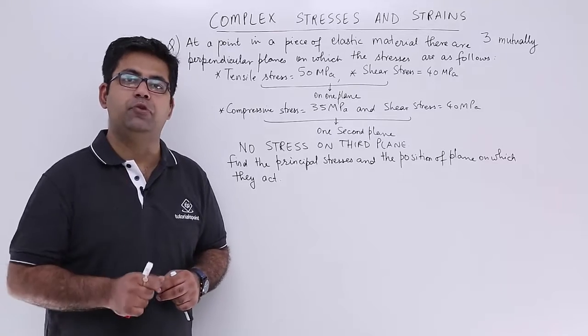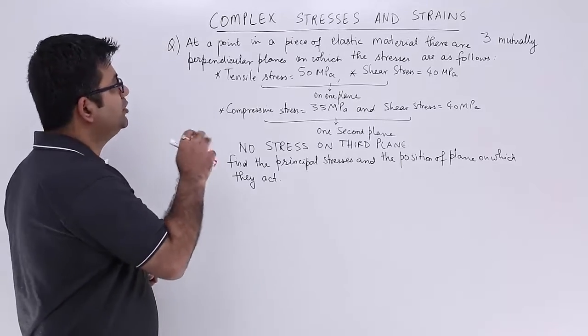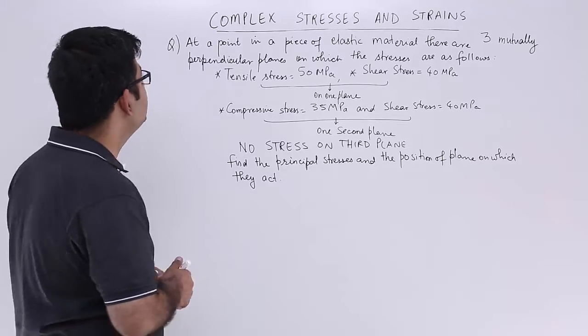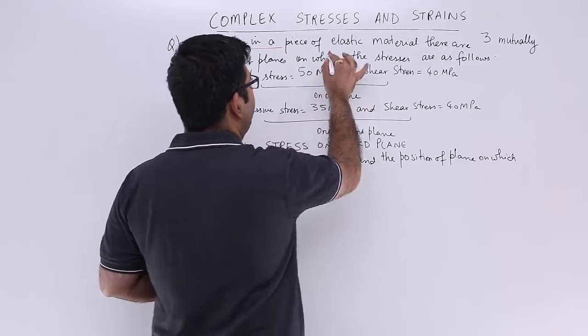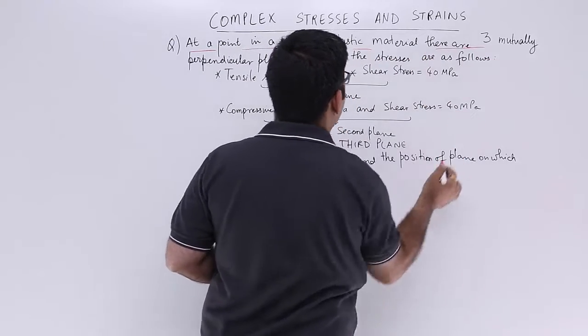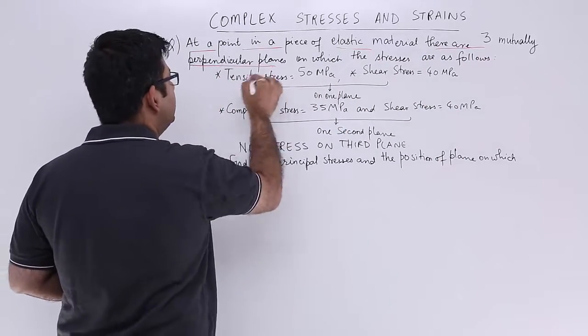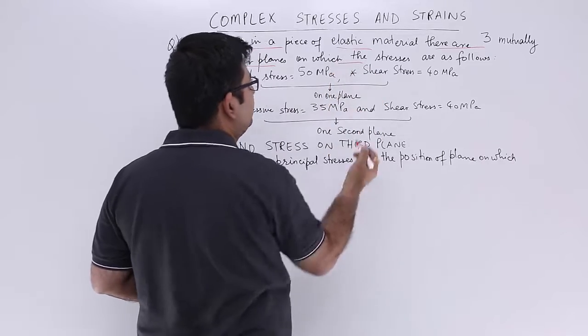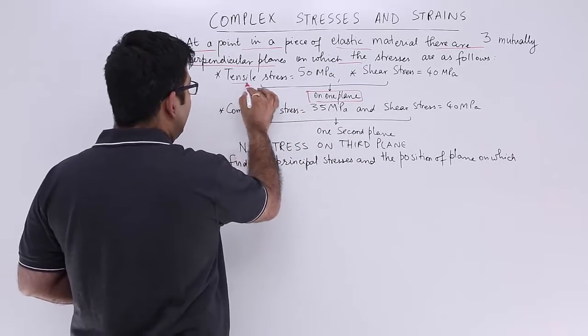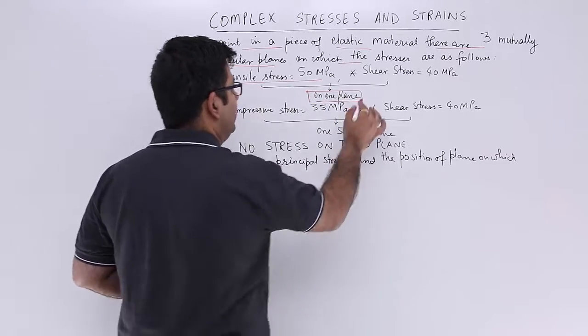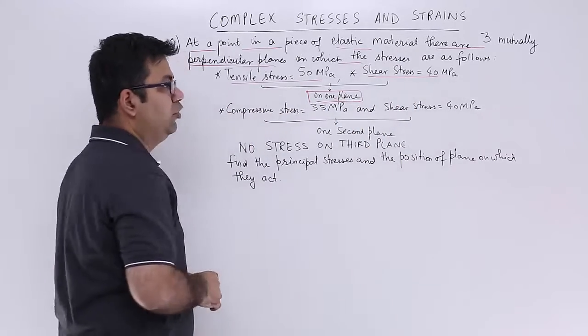Now after understanding the concept of Mohr circle, let's have a look at a question on Mohr circle. The question says at a point in a piece of elastic material there are three mutually perpendicular planes on which the stresses are as follows. On one plane you have a tensile stress of 50 MPa and a shear stress of 40 MPa.